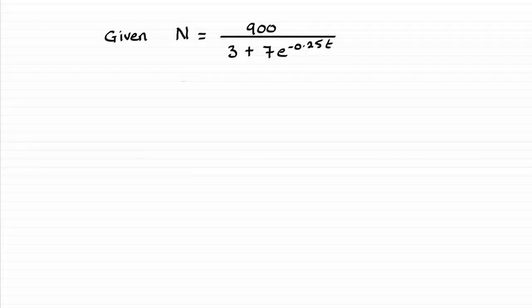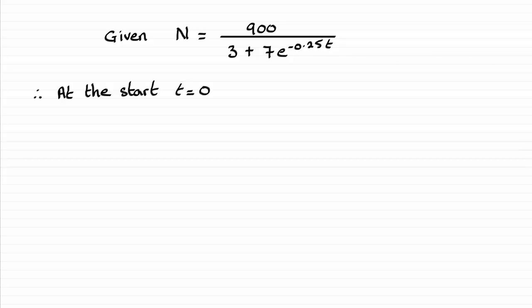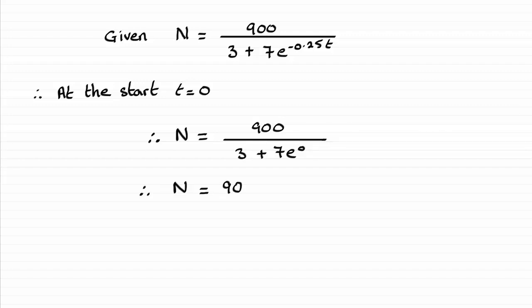For this question, this is a very basic one where we're given n in terms of t, and we're asked to find n at the start. That's going to be when t equals zero. So it's just a question of substituting t equals zero into that equation, giving us 900 over 3 plus 7e to the power 0. Well, e to the power 0 is 1, so you're left with 900 divided by 10, and that's going to be 90. So therefore n equals 90.